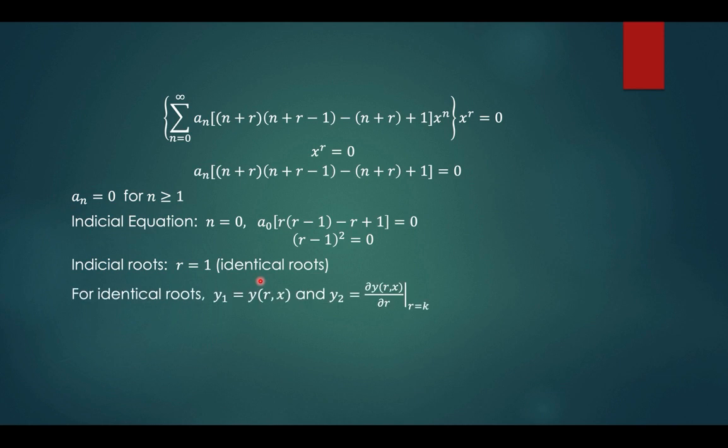For identical roots, if y1 is your first independent solution, then y2 can be obtained from y1 by getting the partial derivative and then evaluating at r equals k. In this case, our k is equal to 1. Since a sub n is equal to 0 for n greater than or equal to 1, then your first solution will be a sub 0 x raised to r.